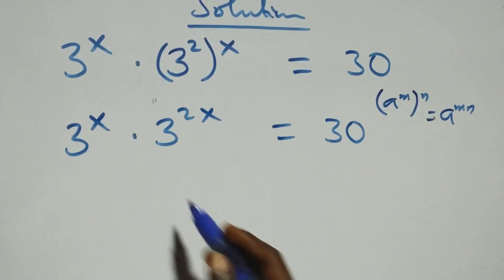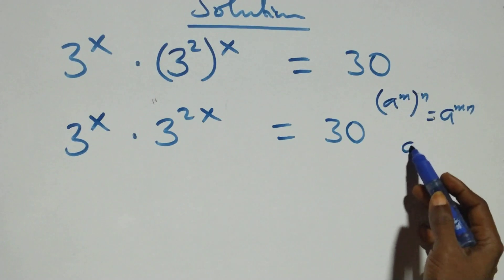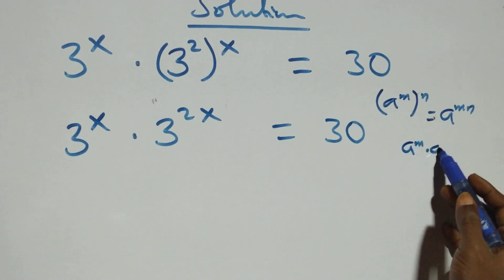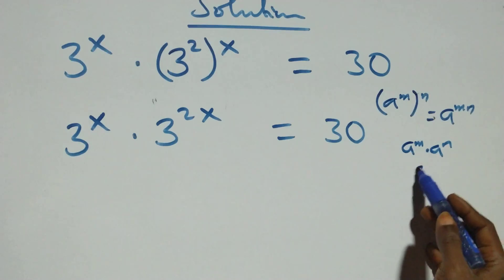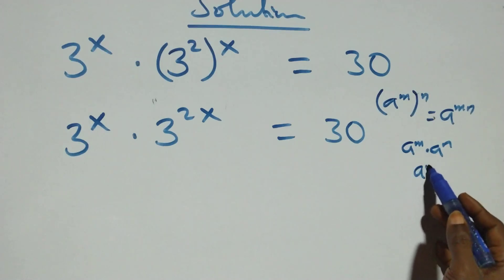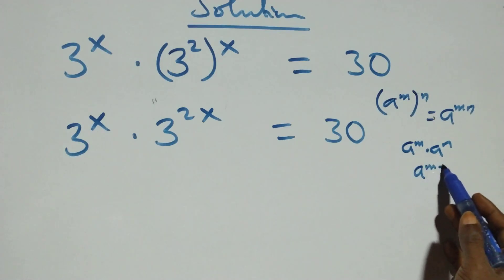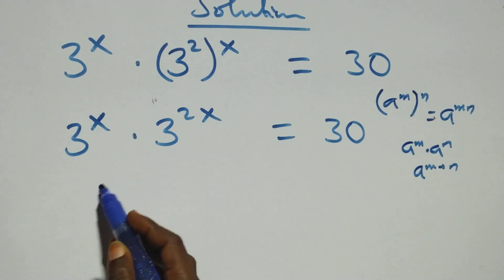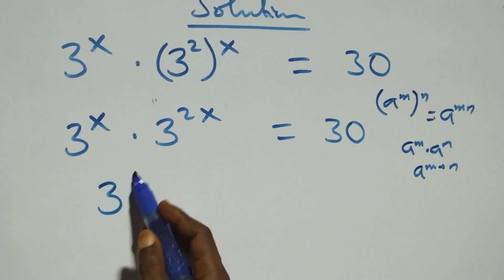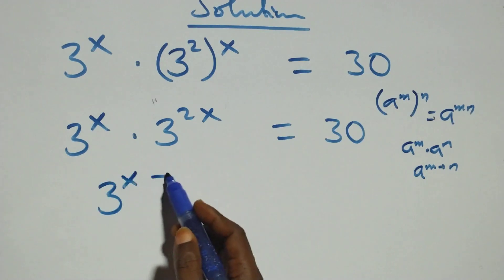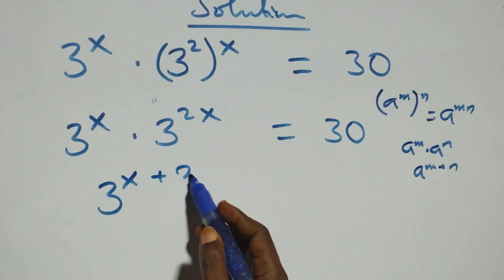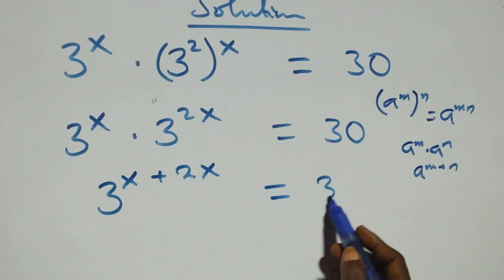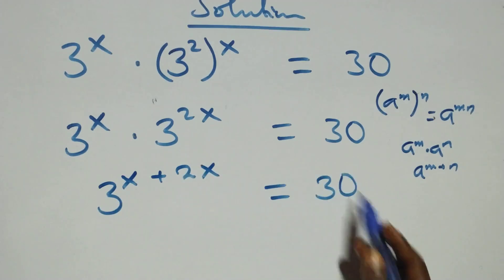Then, this follows a law of indices. When we have a raised to power m times a raised to power n, this is the same thing as a raised to power m plus n. So what we have becomes 3 raised to power x plus 2x, which is 3 raised to power 3x, equals 30 on this side.